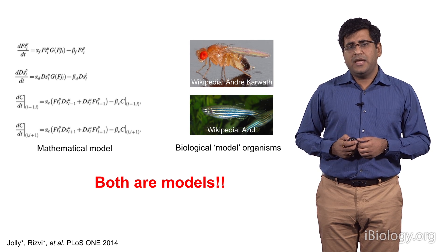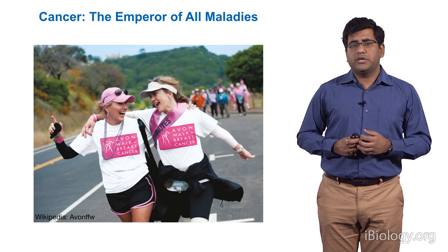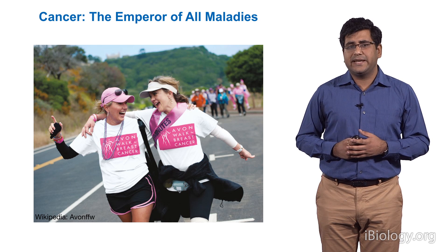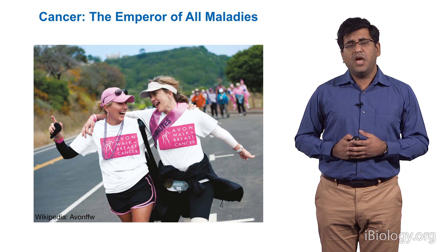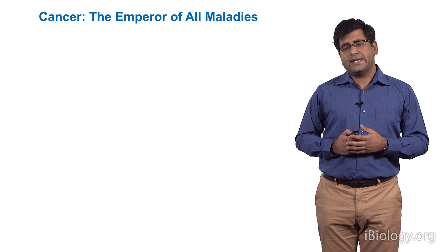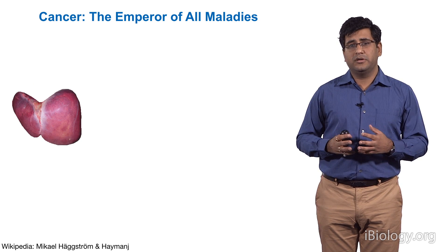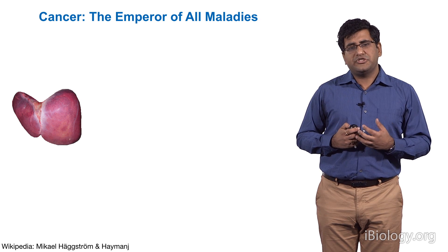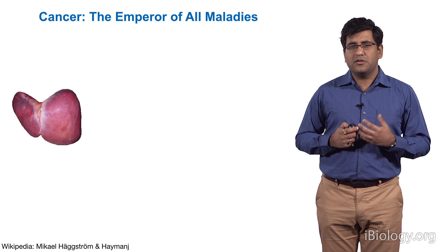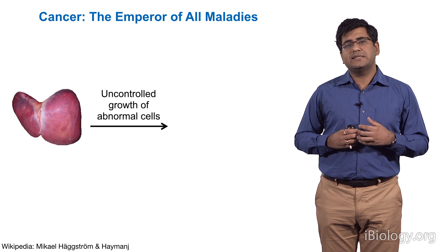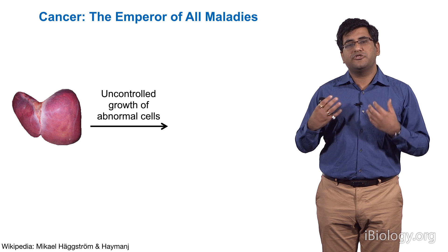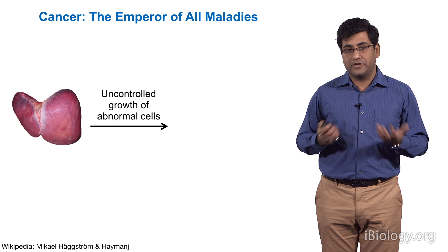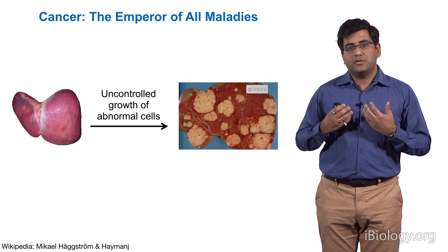Coming back to cancer. This word sends a shiver down our spine. Each of us, directly or indirectly, have been affected by it. What is cancer? Here is a normal liver, where all cells are functioning properly. But when due to some aberrations — genetic, environmental, or some other reason — some cells start dividing uncontrollably in a manner that disrupts the normal physiological functioning of the organ, that is when it is cancer. Some white speckles, which is cancerous tissue, are taking over the normal tissue function.